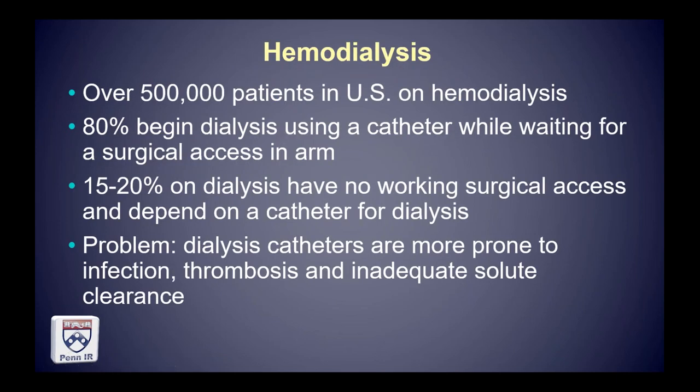Beginning with the hemodialysis catheter example — this is an extremely ubiquitous problem. Nearly 600,000 patients in the United States are on hemodialysis, and for various logistic reasons the majority of these folks begin dialysis with a catheter because they haven't had a surgical access created in their arm. There's time required to create that access and then time for it to mature.